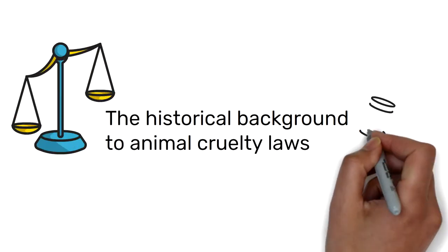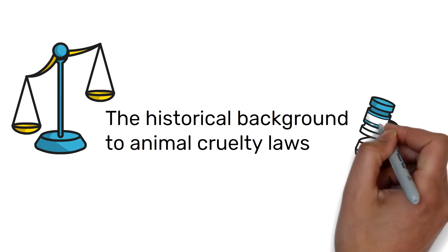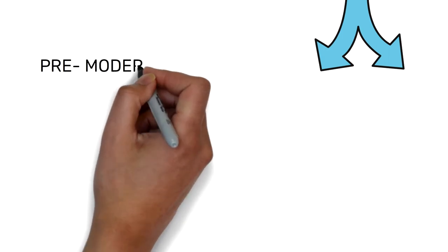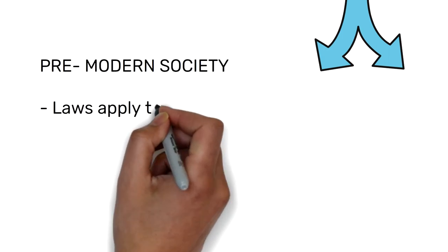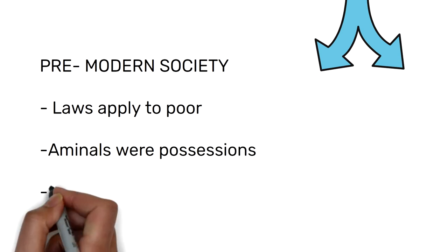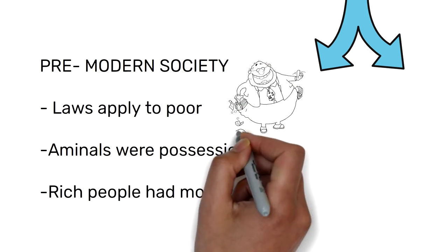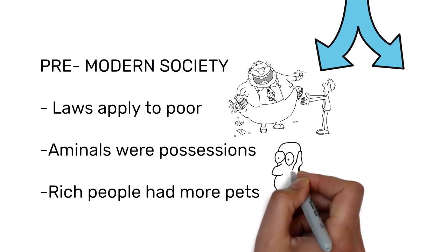We may all be aware of the way animals are treated today, but how were they treated previously? In pre-modern societies, the laws were mostly applied to the poor who were not members of a ruling aristocracy, and animals were referred to as possessions, with rich people typically having more pets.